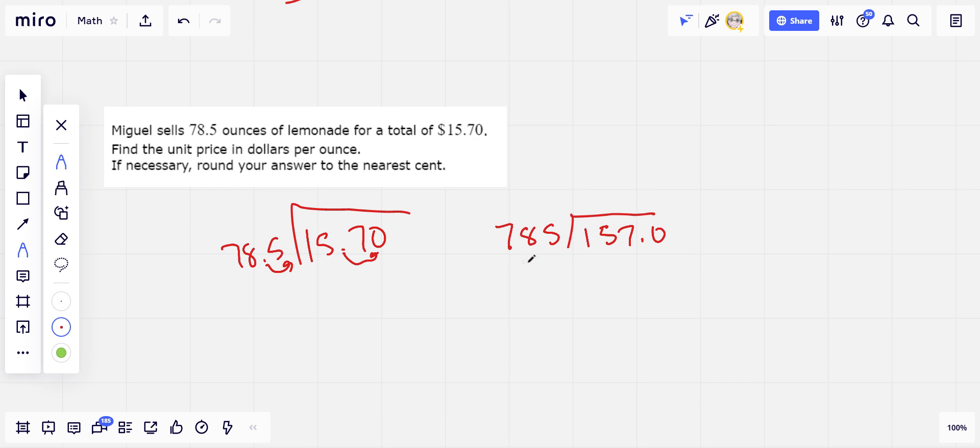So how many 785s are there? Well, 15, 157, 1570. So we're going to have a decimal point up here. It does say round your answer to the nearest cent. So this division may go on for a while. Maybe I should have used a calculator, but I'm still going to try this.